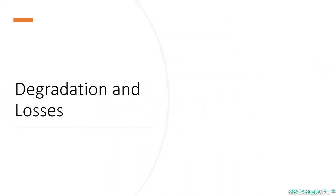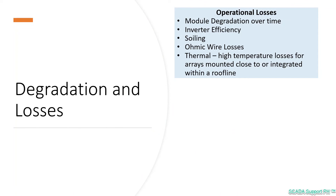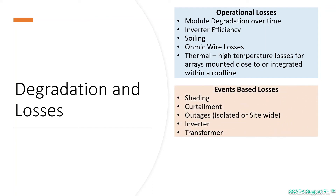However, there are some degradation and losses on a PV system. The actual solar PV system will produce less power during operation due to losses like module degradation, inverter efficiency, soiling, ohmic losses, and thermal losses. We also have event-based losses, which occur on a yearly or seasonal basis, such as shading, curtailment, and isolated outages.